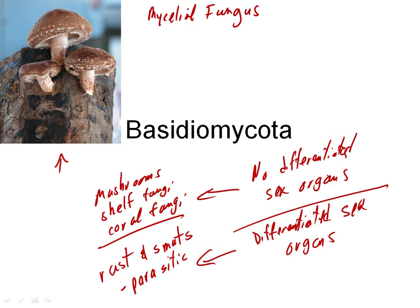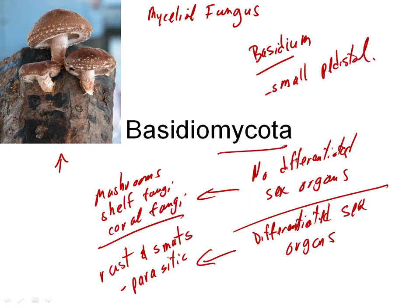You remember in the ascomycota, there is one characteristic defining all ascomycota — the ascus. Basidiomycota are the same. There is one characteristic that defines all basidiomycota, and that is a basidium. Basidium means a small pedestal, and mycota is the division ending for the kingdom fungi — so these are the pedestal fungi. The basidium has a lot of different shapes within the basidiomycota, and we'll look at those in a minute, but there's always a basidium of some kind.